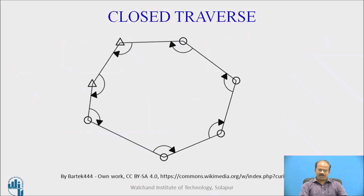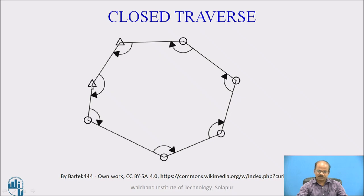All of us are familiar with the types of traverse. This is a closed traverse. There is a starting point and the traverse is moving in an anti-clockwise direction. In theodolite traverse, it is mandatory to run in anti-clockwise direction and it is supposed to end up at the starting point. In the absence of all types of error it will end up there, but if there is angular or linear error, it may fail by a certain amount — this is the closing error.